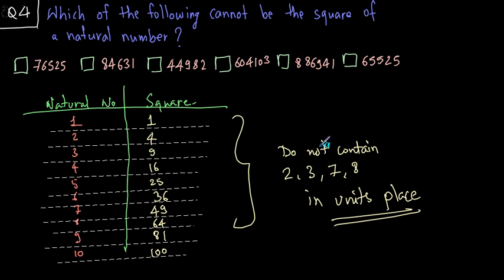In the options, the numbers which do contain these digits 2, 3, 7 or 8 in their units place is not going to be a square of a natural number. This number 76525 does not contain 2, 3, 7 or 8. So it is a square. This is also a square. The third one, 44992 contains 2 in the units place. So this is going to be the correct answer for this question. Let's see if others are not squares. This one, 604103 contains 3 in the units place. So it is not a square of a natural number. The rest could be squares of a natural number. So the answers to this question are these two options.